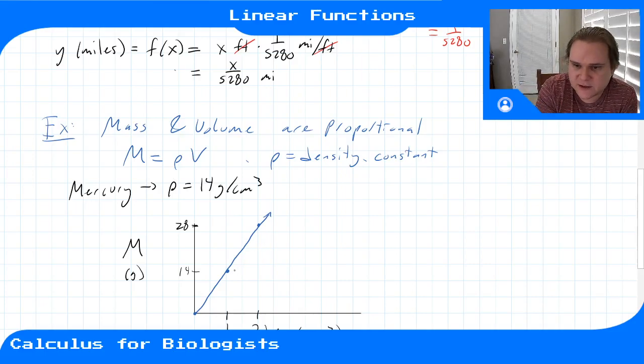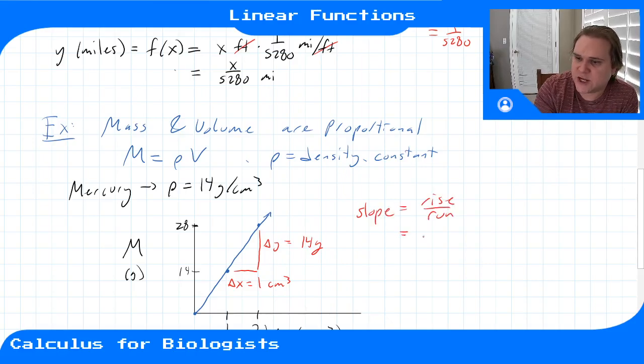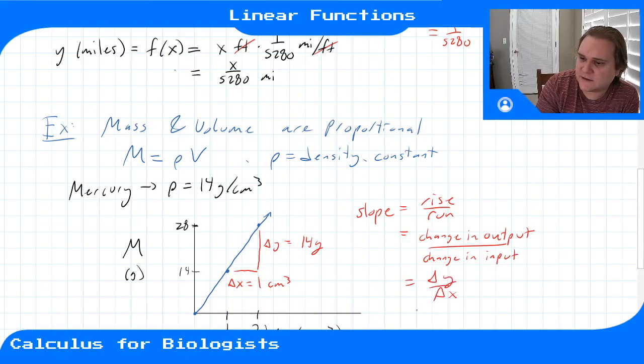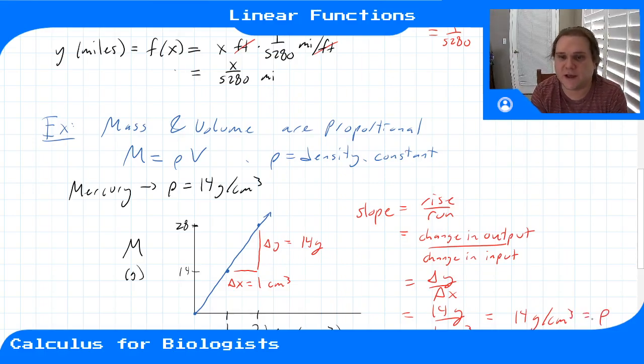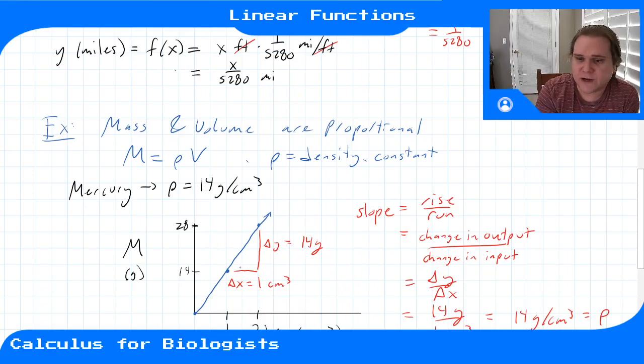We can check our slope again from here to here. Our delta y - we went up by 14 grams. And our delta x was one centimeter cubed. So our slope, rise over run, change in output over change in input, delta y over delta x, is 14 grams over one centimeter cubed, which is 14 grams per centimeter cubed, which we said was the density - our proportionality constant. Whenever you're thinking about a linear function that has associated units and dimensions, you have to include the units of your slope.